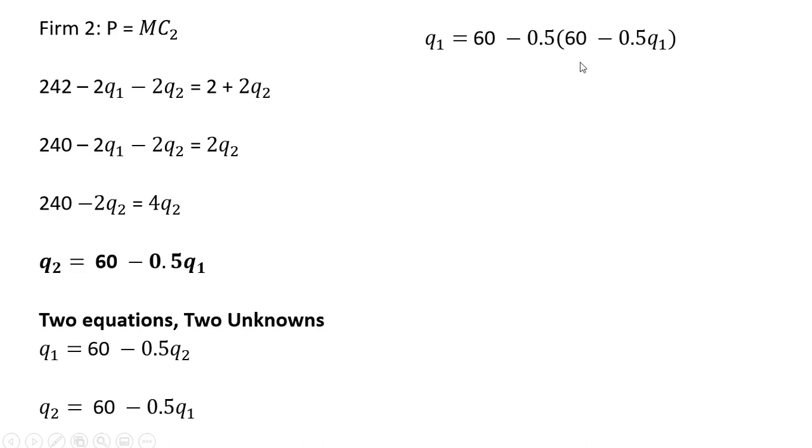Making that substitution and now simplifying. Minus 0.5 times 60 is minus 30, and minus 0.5 times minus 0.5Q subscript 1 gives us plus 0.25Q subscript 1. Simplifying some more, 60 minus 30 is 30. Then we need to take this term and subtract it from both sides, so we have 1Q subscript 1 minus 0.25Q subscript 1. The left hand side will simplify down to 0.75Q subscript 1. Now let's divide through by this 0.75, and firm 1 will produce 40 units of output.